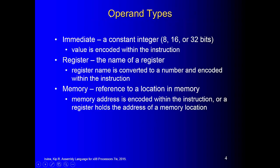For operand types, we can use constant integers — they are called immediate values. Also, registers can be used as operand types. You can use EAX, EBX, ECX, EDX, ESI, EDI. Memory means variables, and we can declare variables in the data segment.